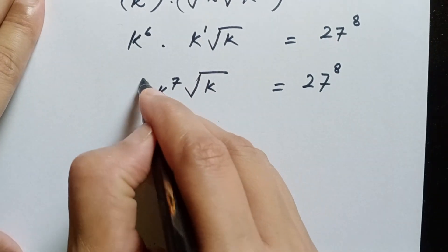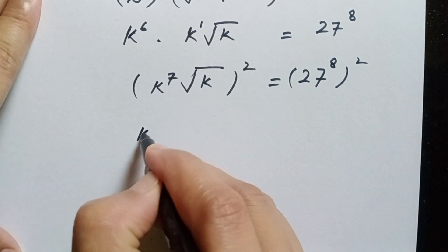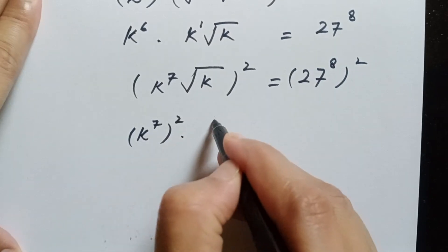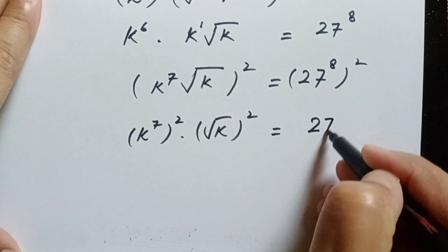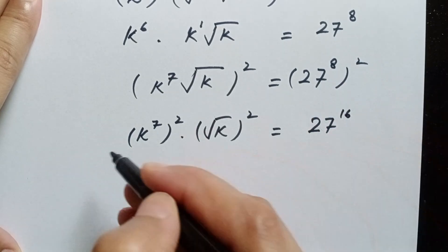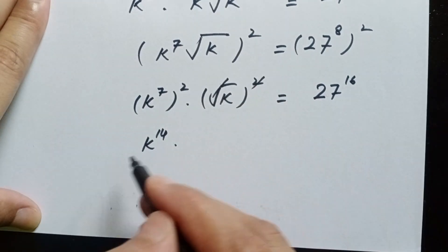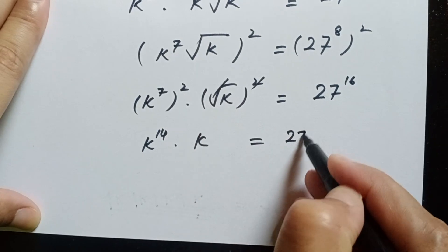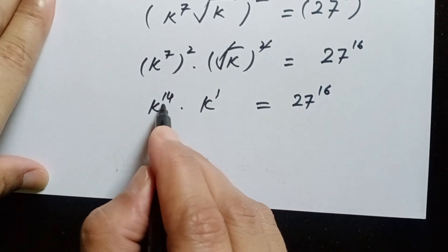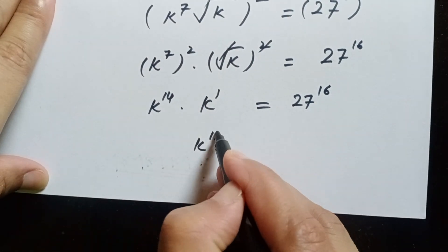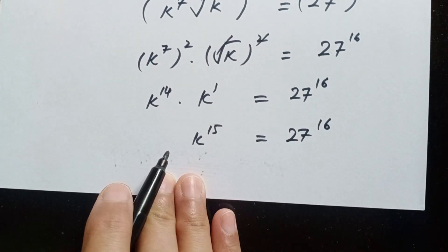So here we have k to the power of 8. Squaring both sides again: square root of k squared gives k, and 8 times 2 is 16, so 27 to the power of 16. So 7 times 2 is 14, giving k to the power of 14 times k — the power of k is 1 — we can add 14 and 1 to get k to the power of 15 is equal to 27 to the power of 16.